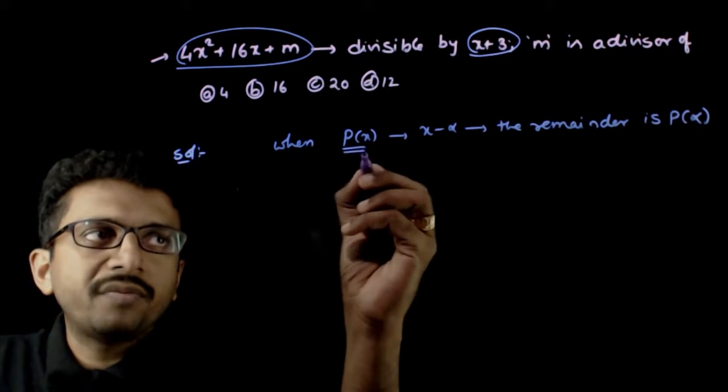So when a polynomial P of x is divided by x minus alpha, a linear factor, the remainder is P of alpha.